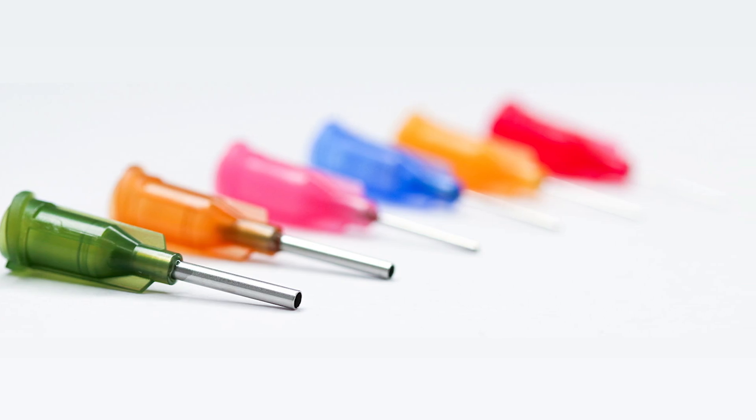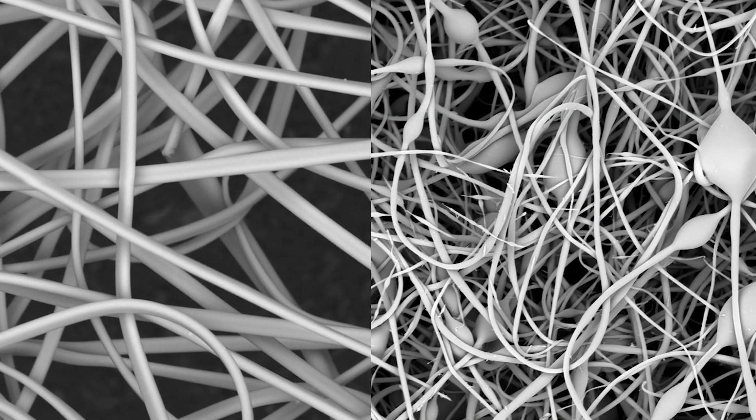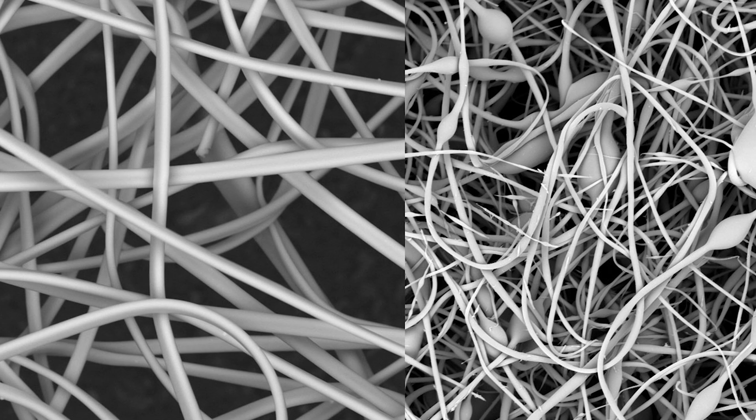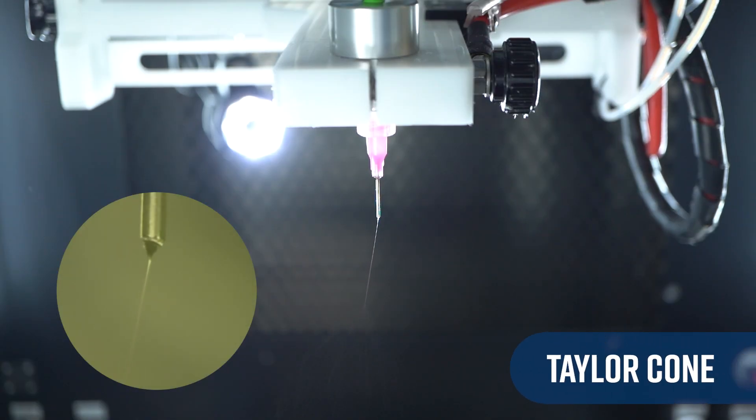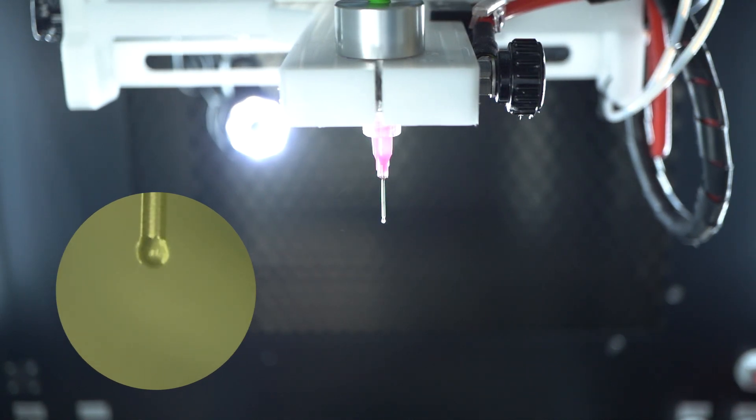For example, a stable and symmetrical cone typically means our process is near optimization and leads to more uniform fibers. However, if we have a receding Taylor cone, we may see drying at the needle tip, leading to non-uniform fiber formation or even no fiber formation due to clogging.